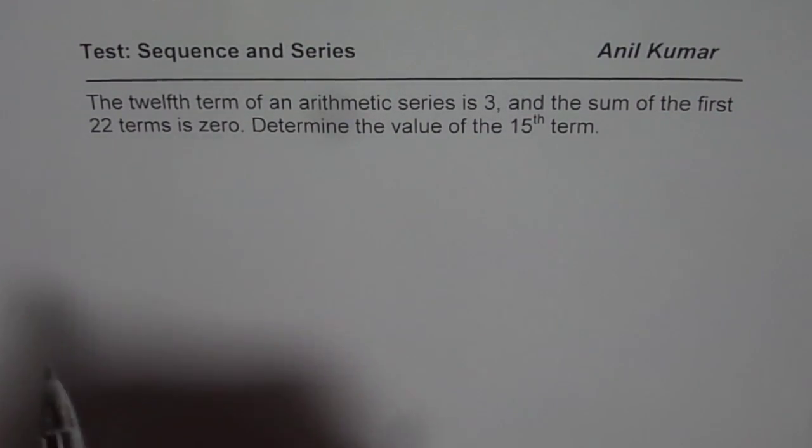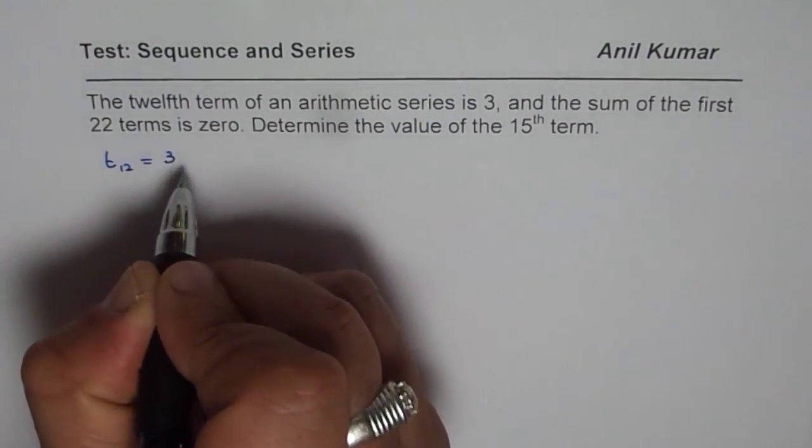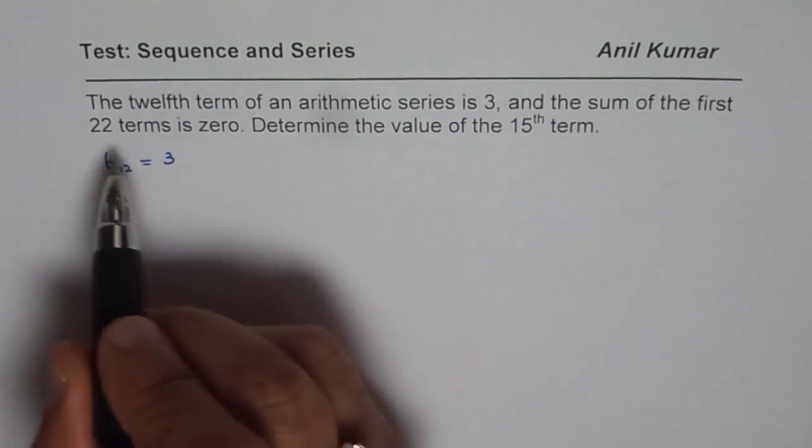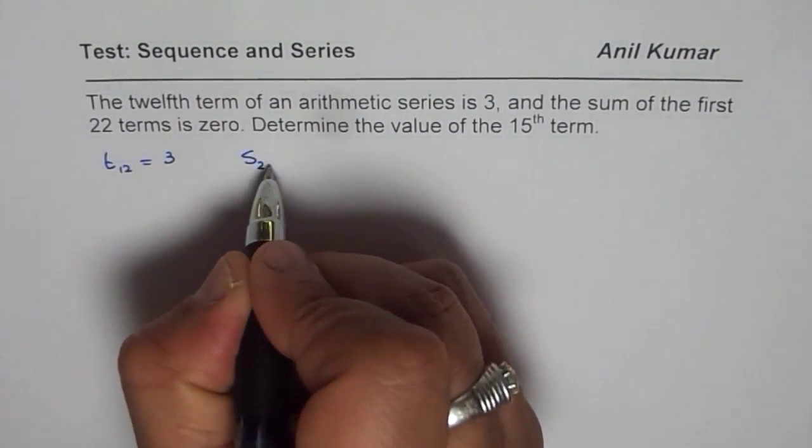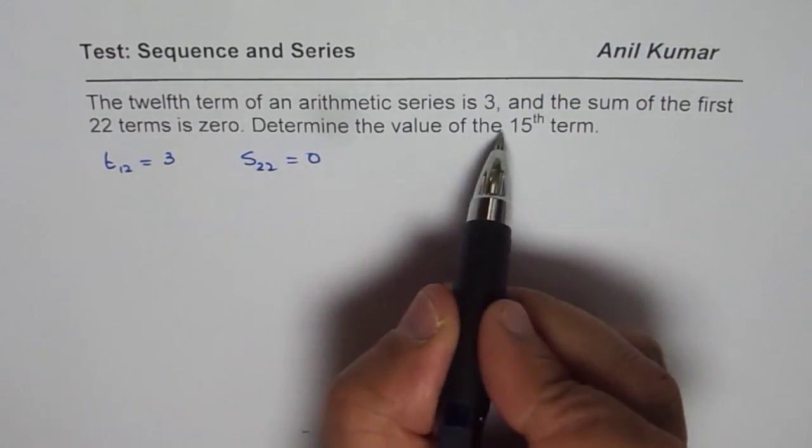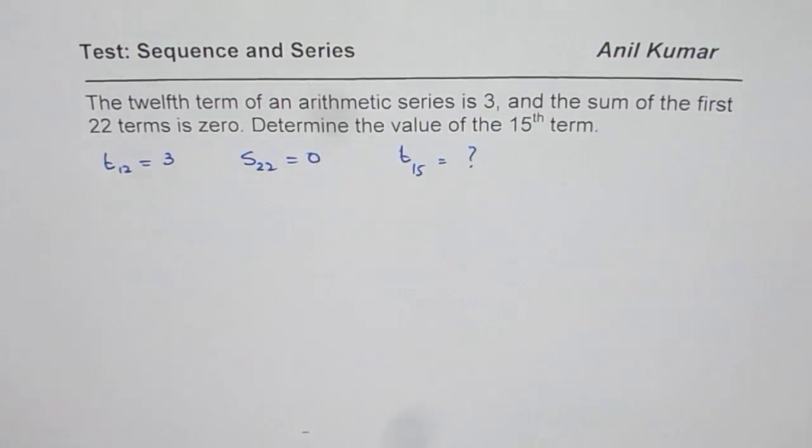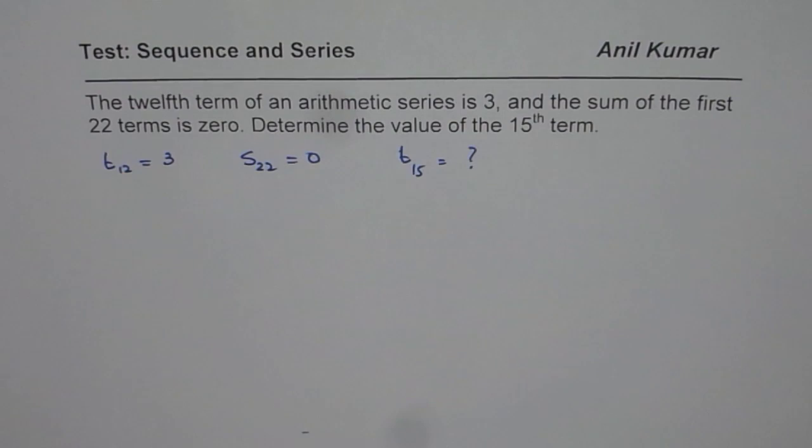So what we know here is that T12 is 3. We also know that sum of first 22 terms, that means S22 is 0. And determine the value of 15th term, so T15 is what we need to find.